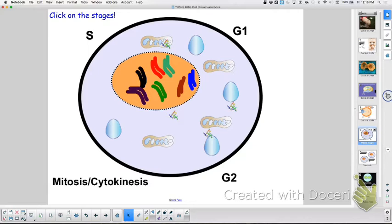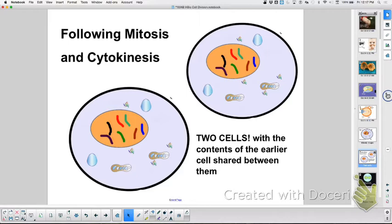And then what follows the S stage? G2. What happens during G2? Proteins. What's wrong with this picture besides you wouldn't see the chromosomes as visible? The proteins are too big, right? Proteins would be much smaller. Following G2, what would we undergo? Mitosis and cytokinesis.